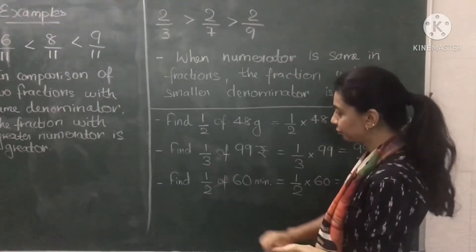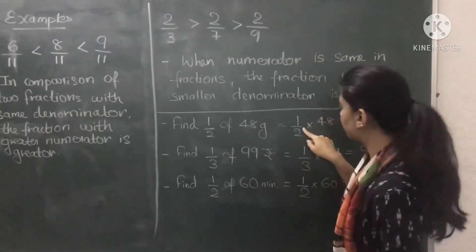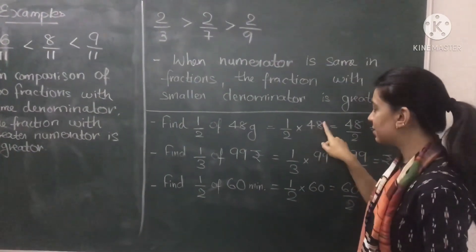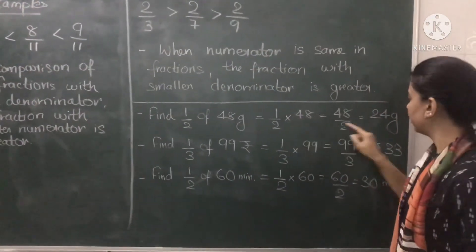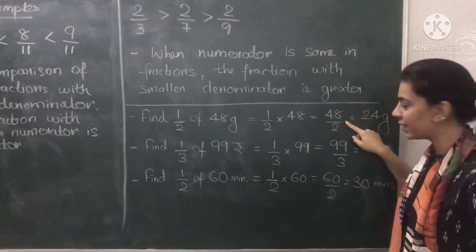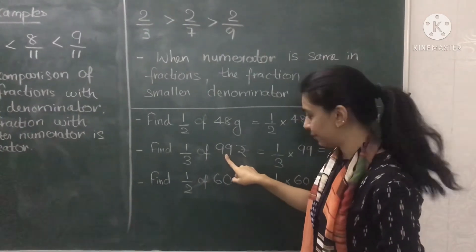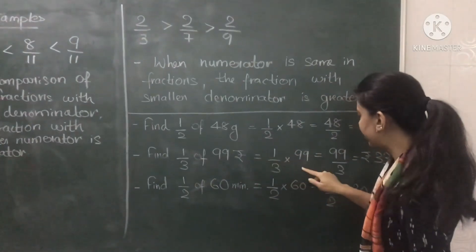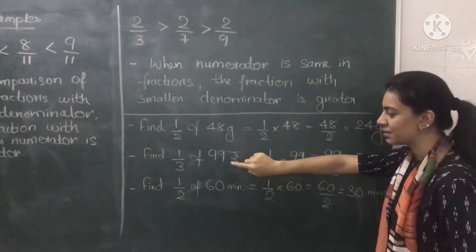How to find 1 by 2 of 48, or half of 48 grams? So 1 by 2 of 48 means 48 divided by 2, which equals 24. Similarly, one third part of 99 means we have to divide 99 into 3 equal parts. So 99 divided by 3 gives us 33 rupees, because rupees is the unit given here.